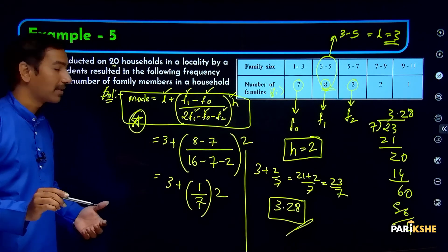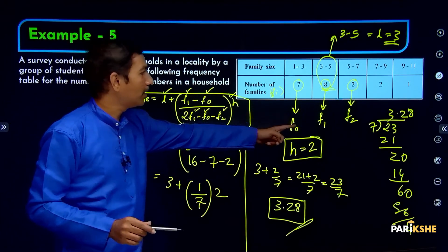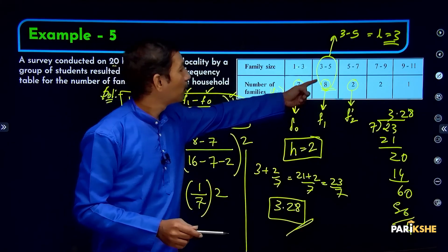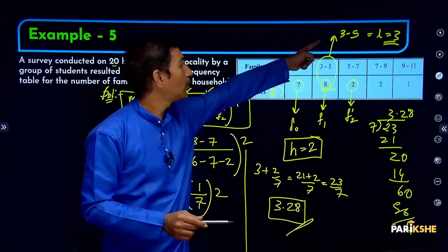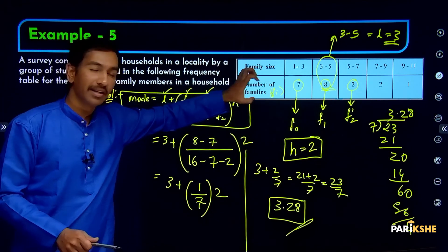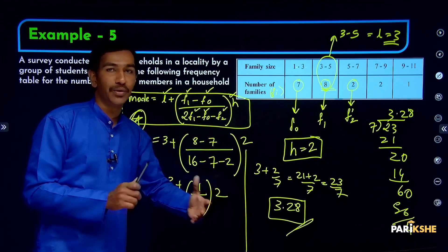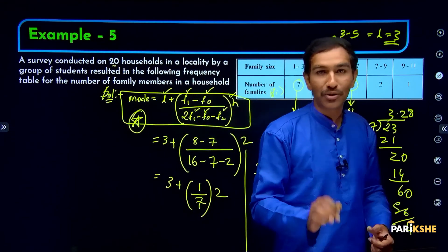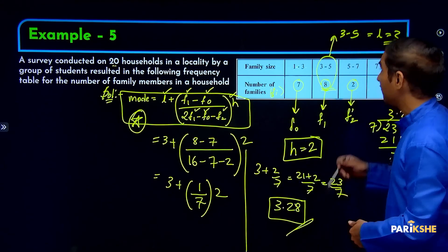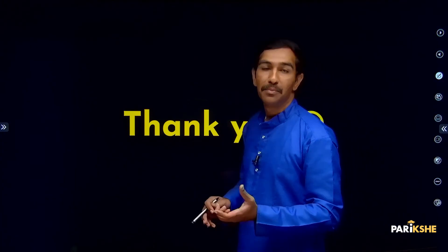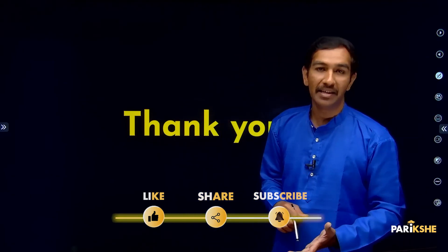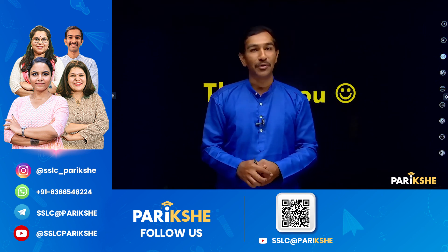It is very important to remember the mode formula. You should know all the terms: F1 is the modal frequency, F0 is the frequency before the modal class, F2 is the frequency after, H is the class interval, and L is the lower limit of the modal class. Following this same procedure for any grouped data problem will earn you full marks. This completes the mode topic. Please take care and subscribe to the YouTube channel. Thank you so much.